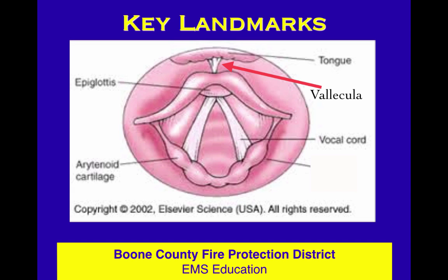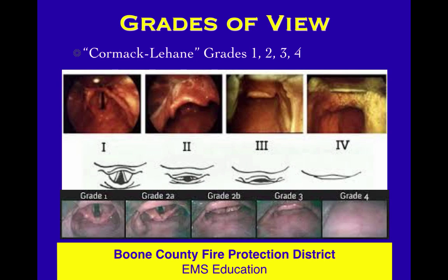We also spend a fair amount of time talking about the arytenoid cartilages, also called the posterior cartilages, and the notch between the two arytenoids — one arytenoid here and one arytenoid here — with the inter-arytenoid notch right at the bottom. We also need to talk about grades of view.